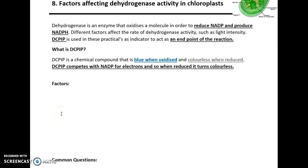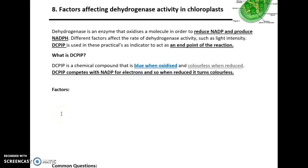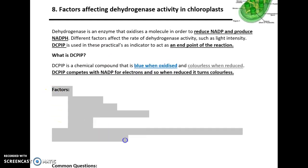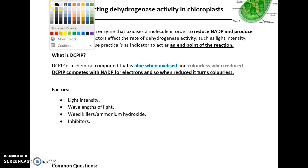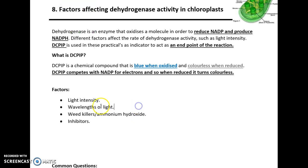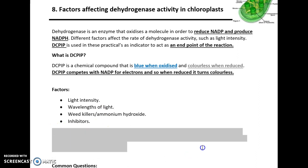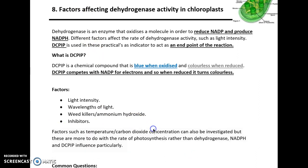Because it's an enzyme, it's effectively the effect of different variables on enzyme action, but this is specific to photosynthesis. So factors include things like light intensity, different wavelengths of light, the use of weed killers or ammonium hydroxide, or the use of an inhibitor — something inhibiting dehydrogenase, such as competitive inhibition or non-competitive inhibition. Temperature would be another valid factor to consider.